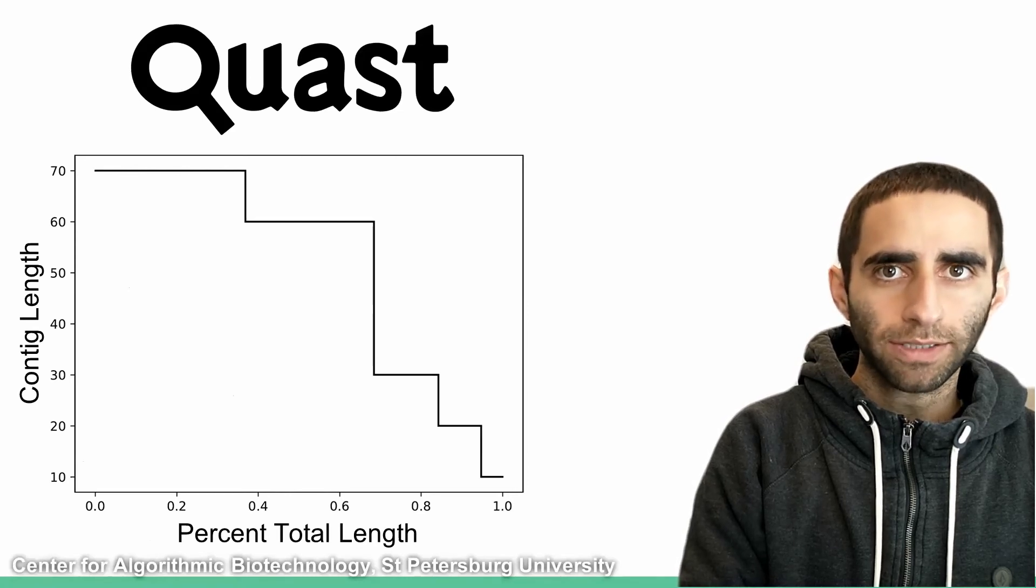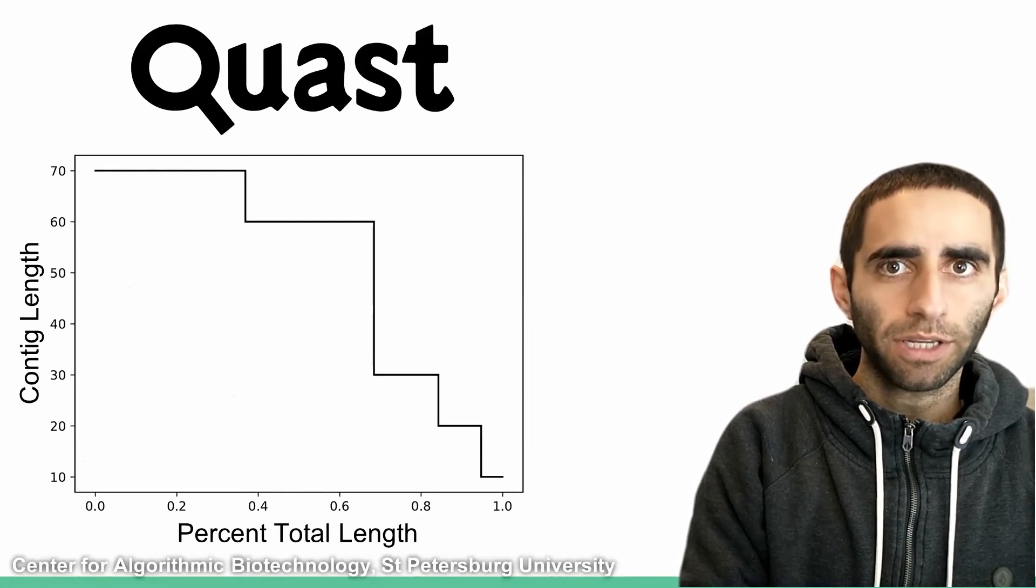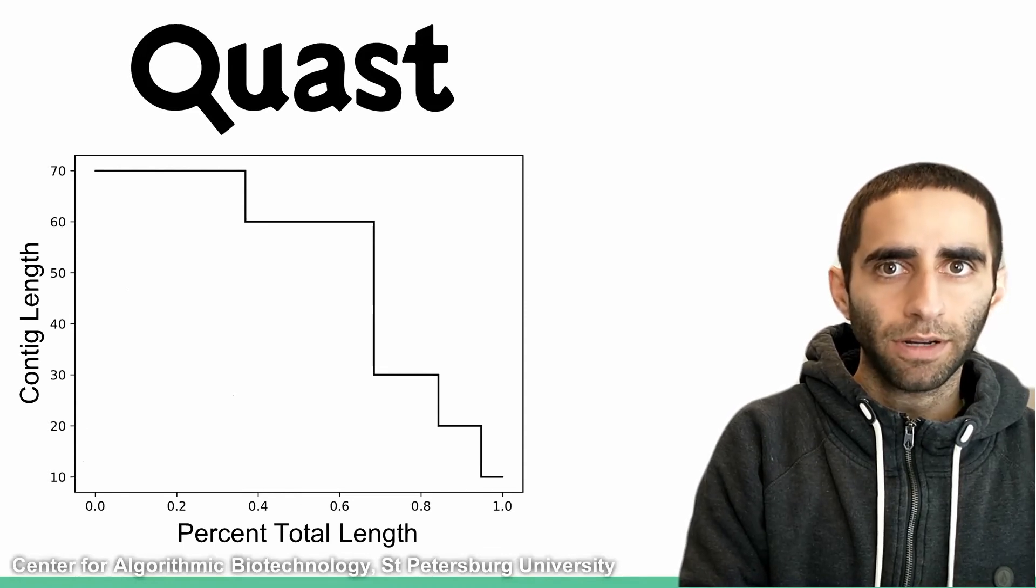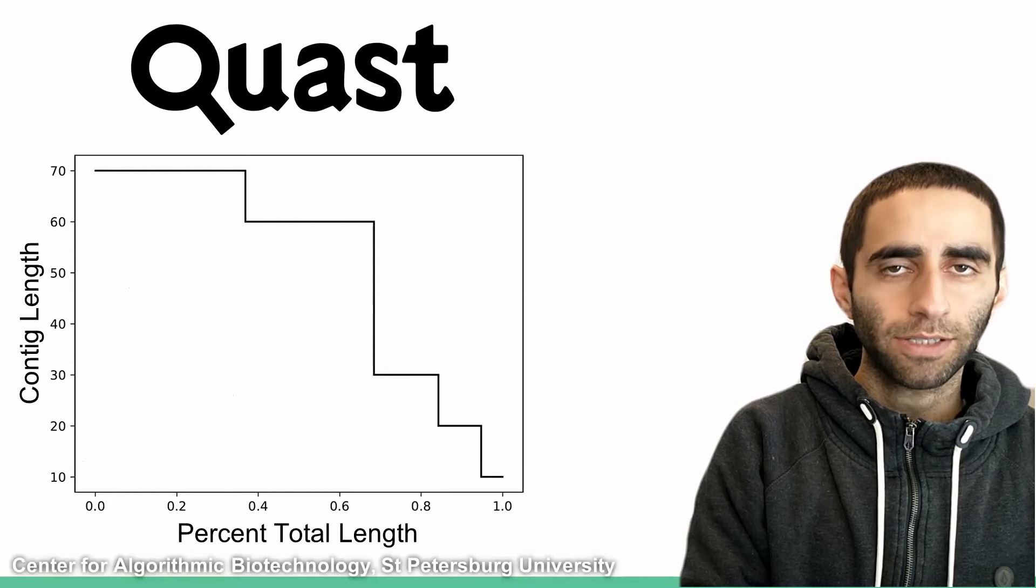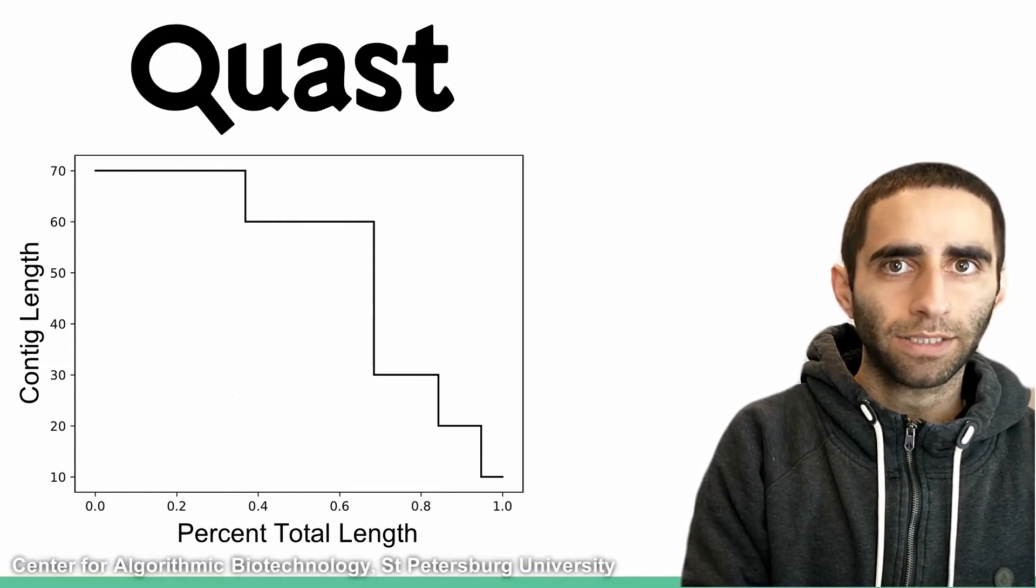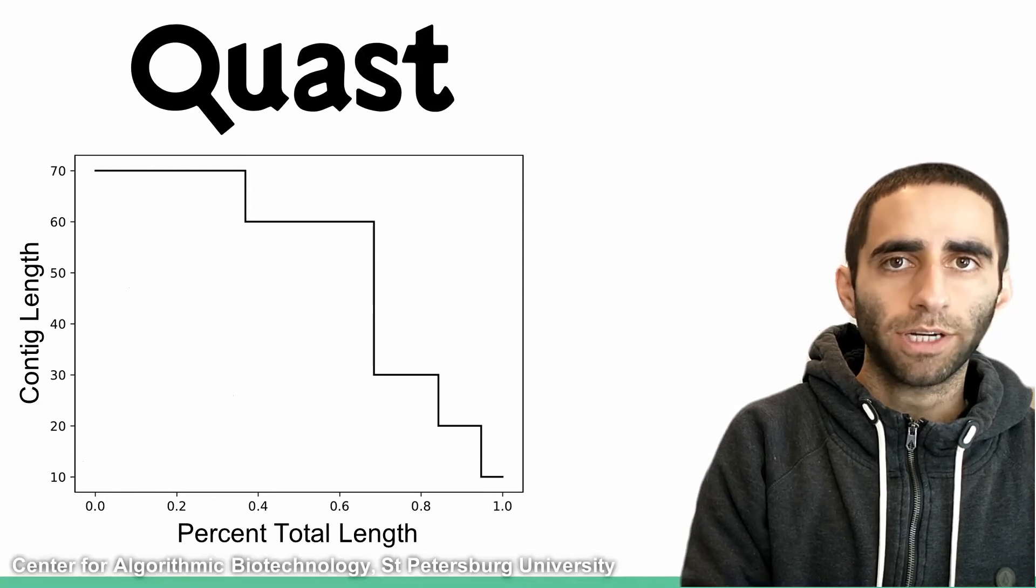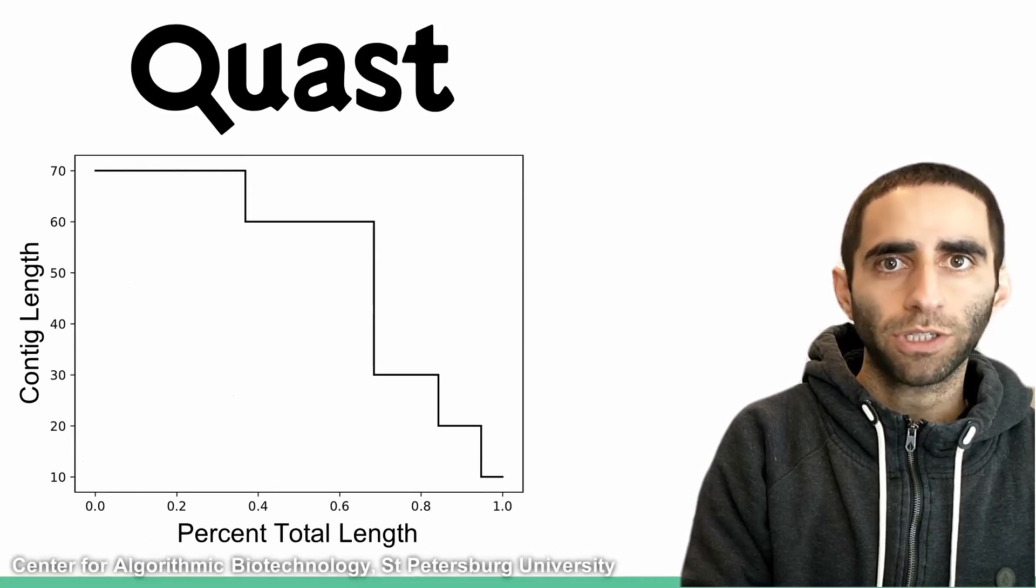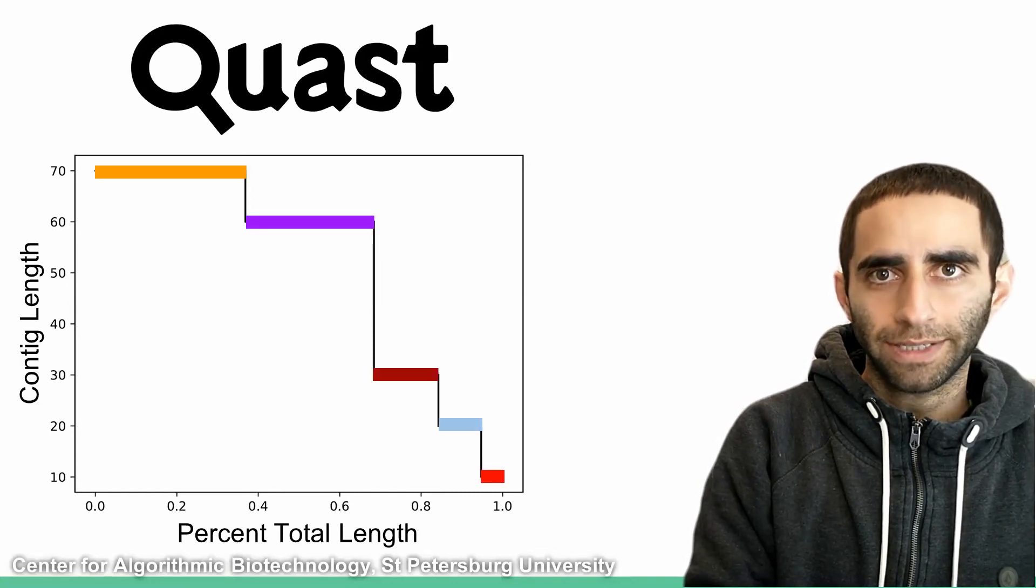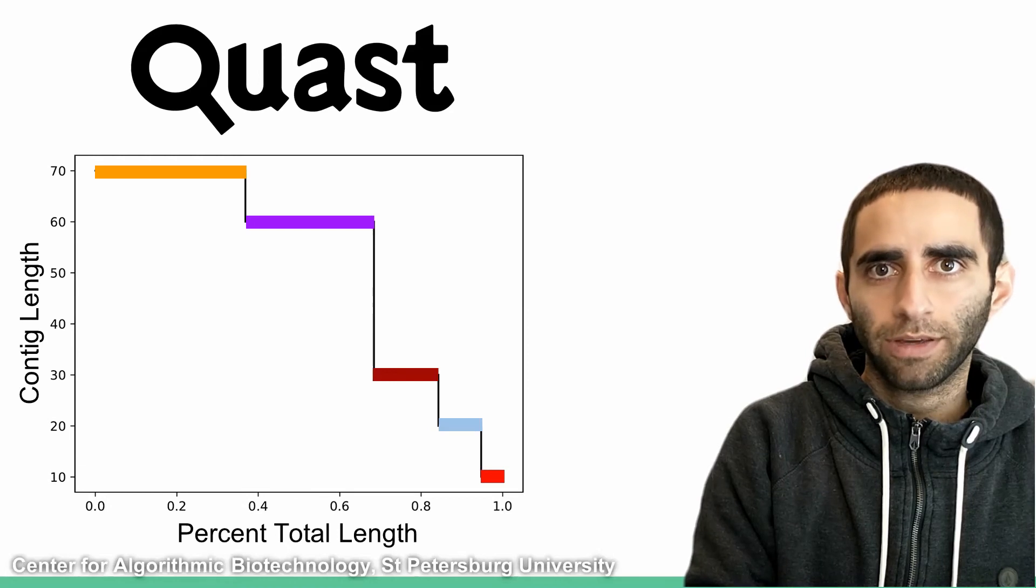This is one example figure that Quast can produce. It's called a contig length plot. And basically, the vertical axis depicts contig length, and the horizontal axis depicts the proportion length of the total sum of the contig lengths. So here, I've overlaid the contigs from the example assembly that we've been working with.